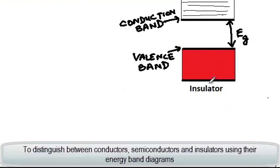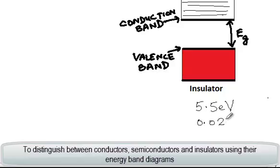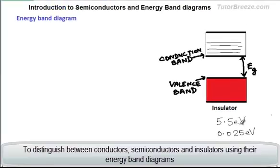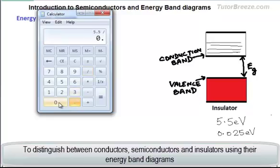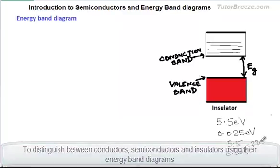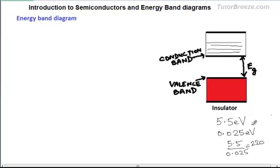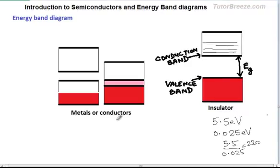In the case of diamond, this energy gap is about 5.5 electron volts, whereas the thermal energy that electrons have at room temperature is just about 0.025 electron volts. So electrons would need about 220 times more energy than they possess — it is not possible for them to jump this gap. There are therefore no conduction electrons available, and the material is an insulator.